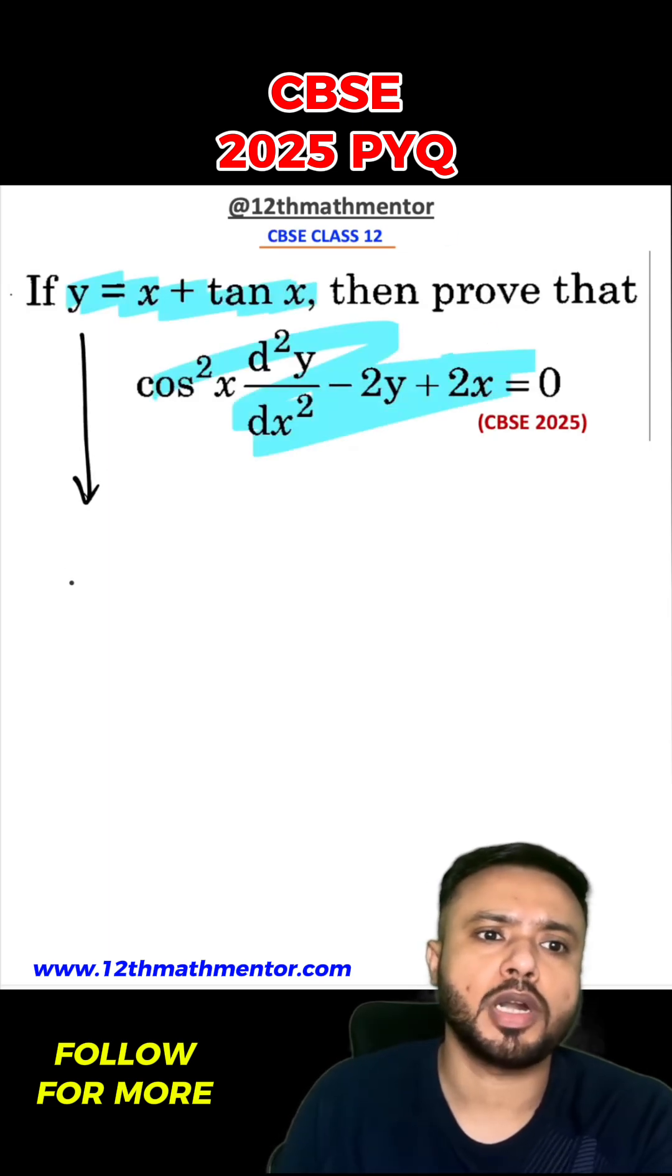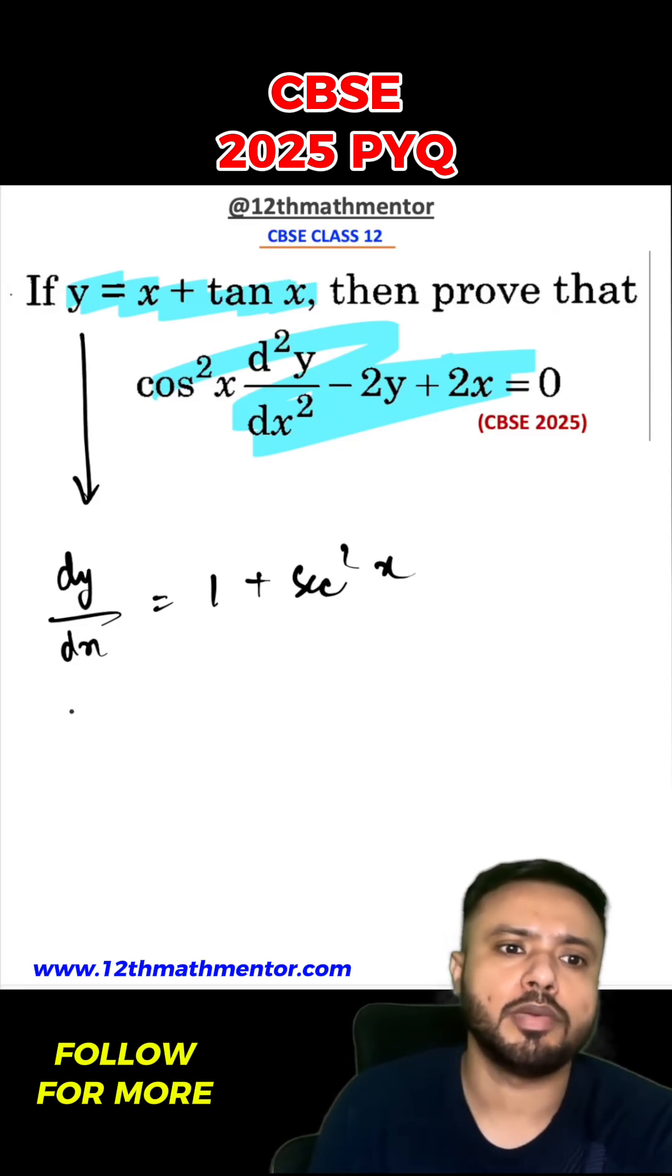To solve this question smartly, first I'm going to differentiate it with respect to x. So dy/dx would be equal to 1 plus sec²x, and now I will double differentiate it.